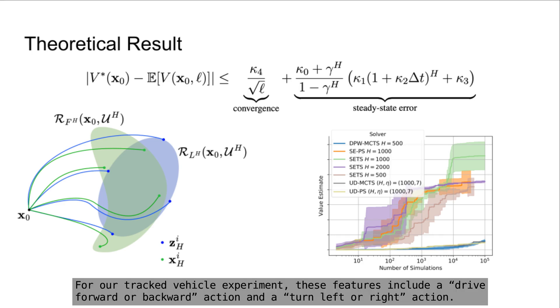For our tracked vehicle experiment, these features include a drive-forward or backward action and a turn-left or right action.